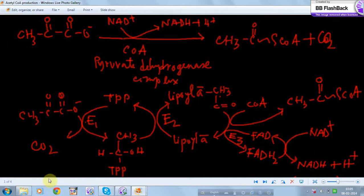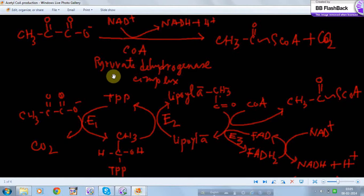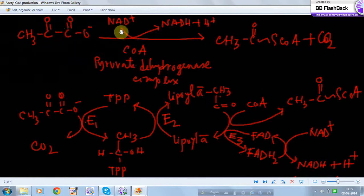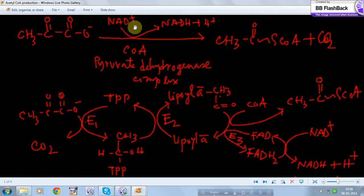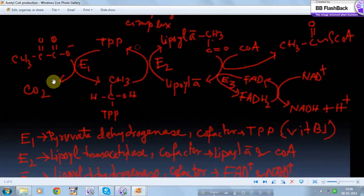The pyruvate dehydrogenase complex also produces NADH + H⁺ as a by-product. This is the structure of pyruvate. The enzyme complex contains three enzymes — that is why we call it the pyruvate dehydrogenase complex. Pyruvate produces acetyl-CoA with the help of coenzyme A, and NAD⁺ is present as a cofactor along with this enzyme.